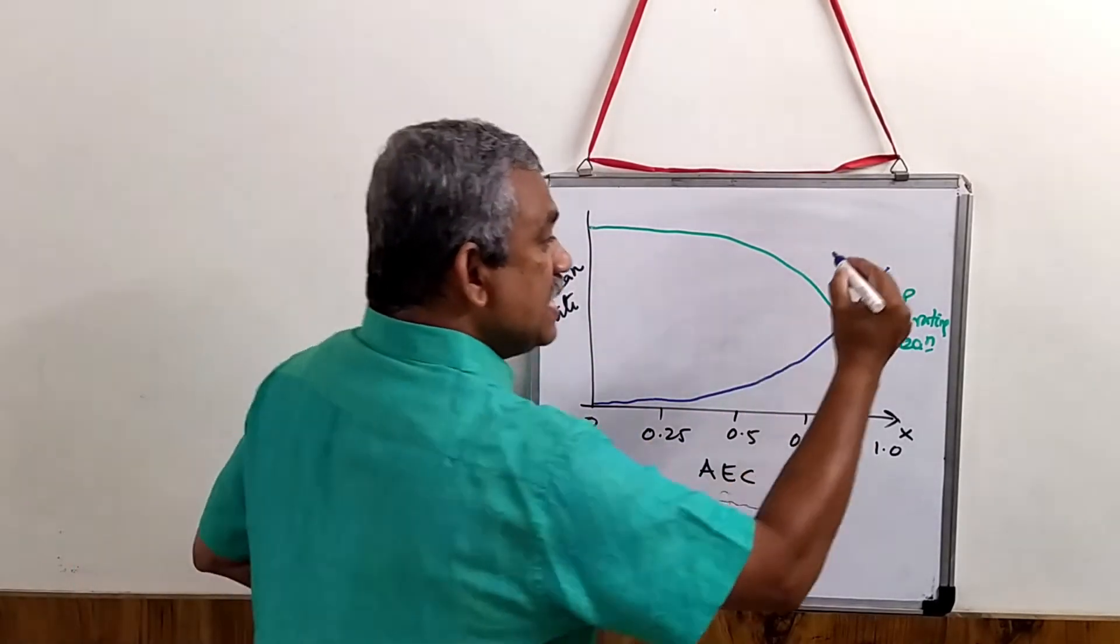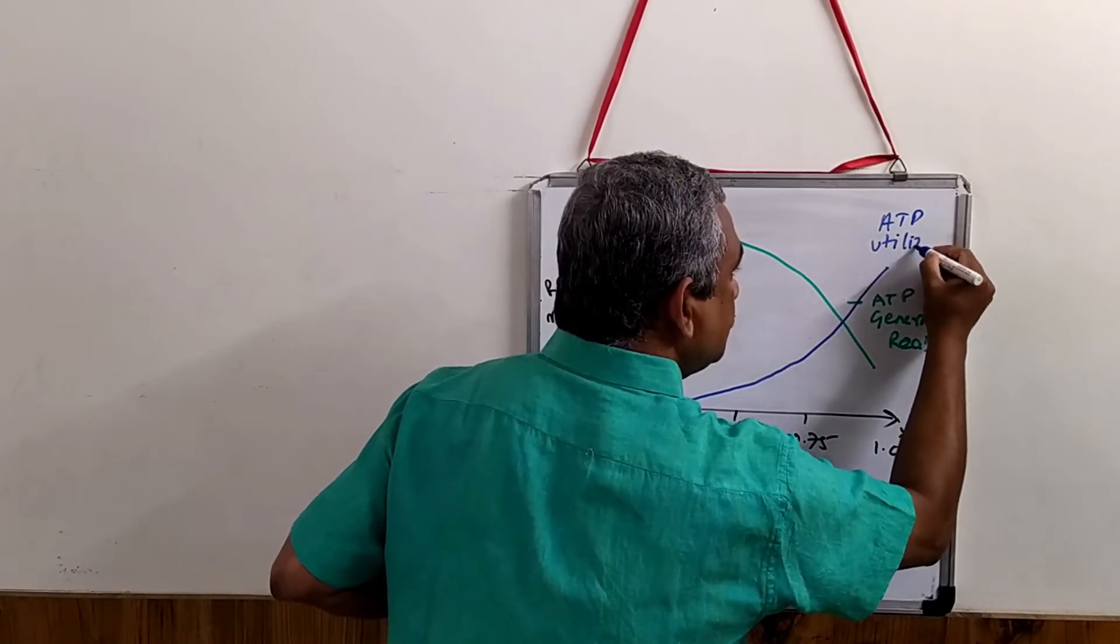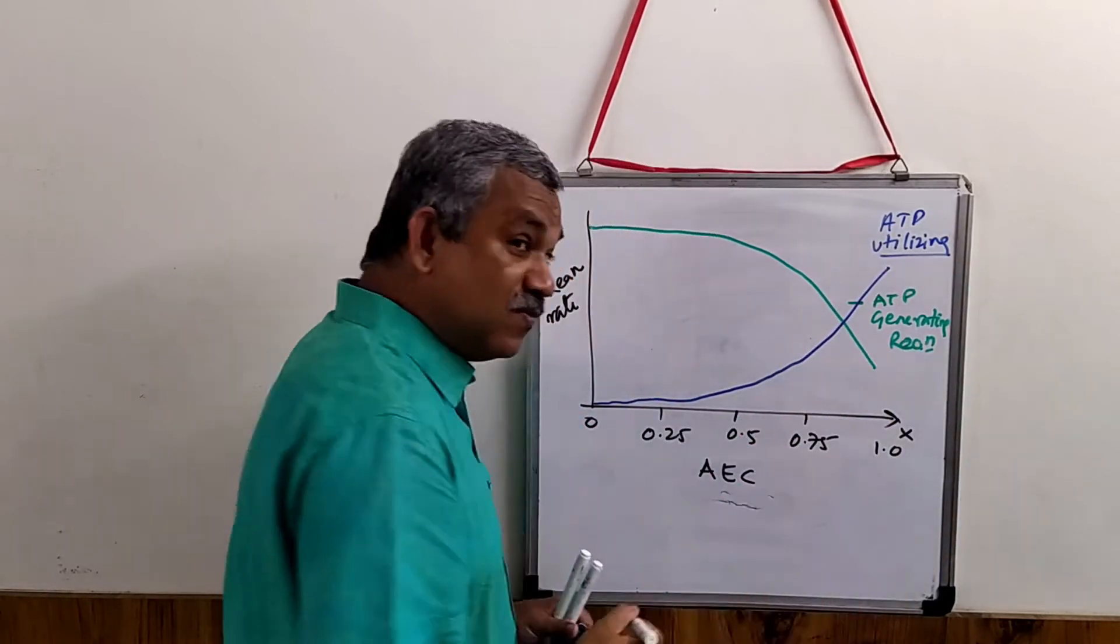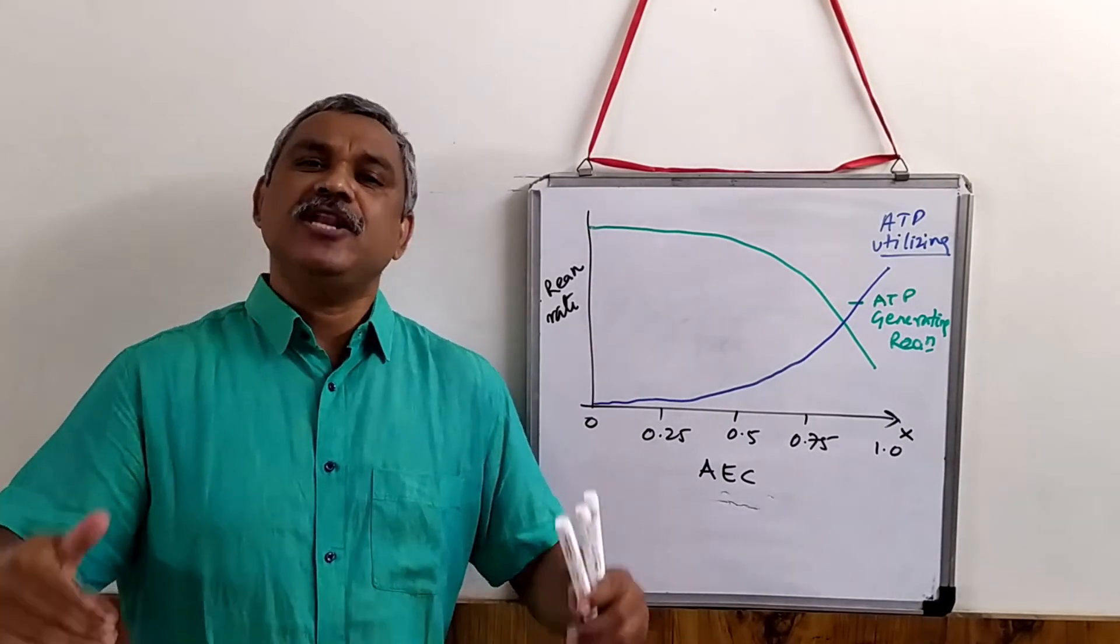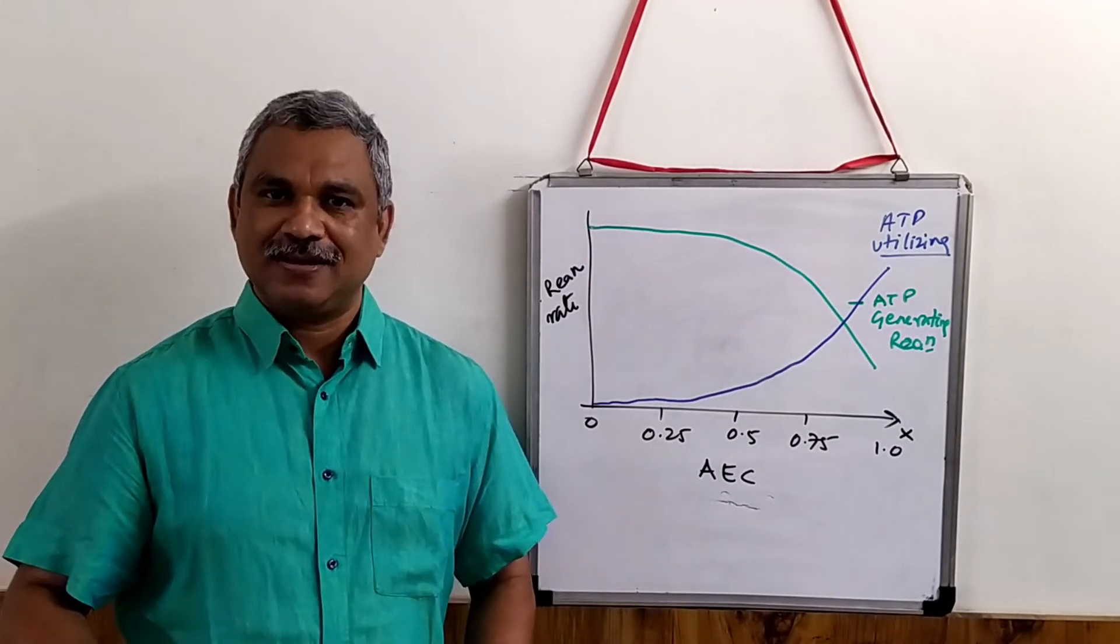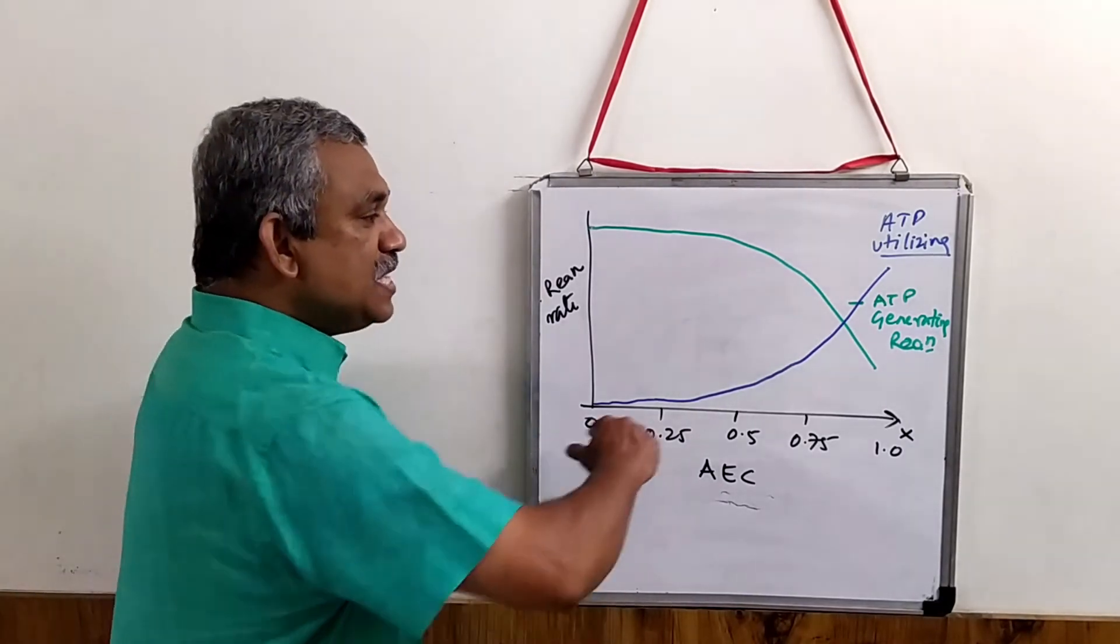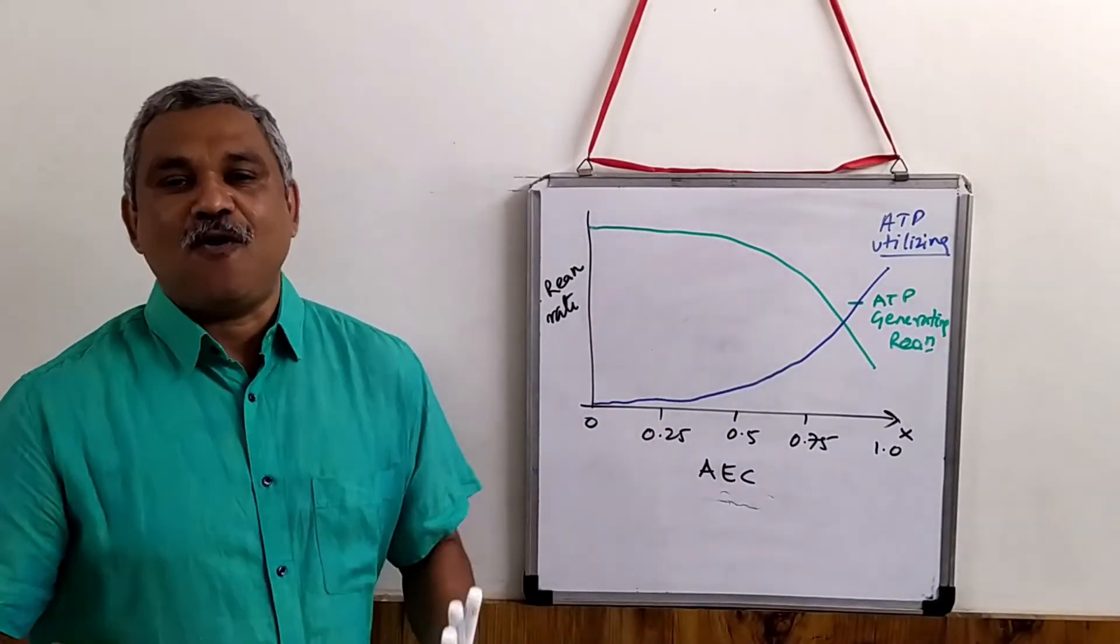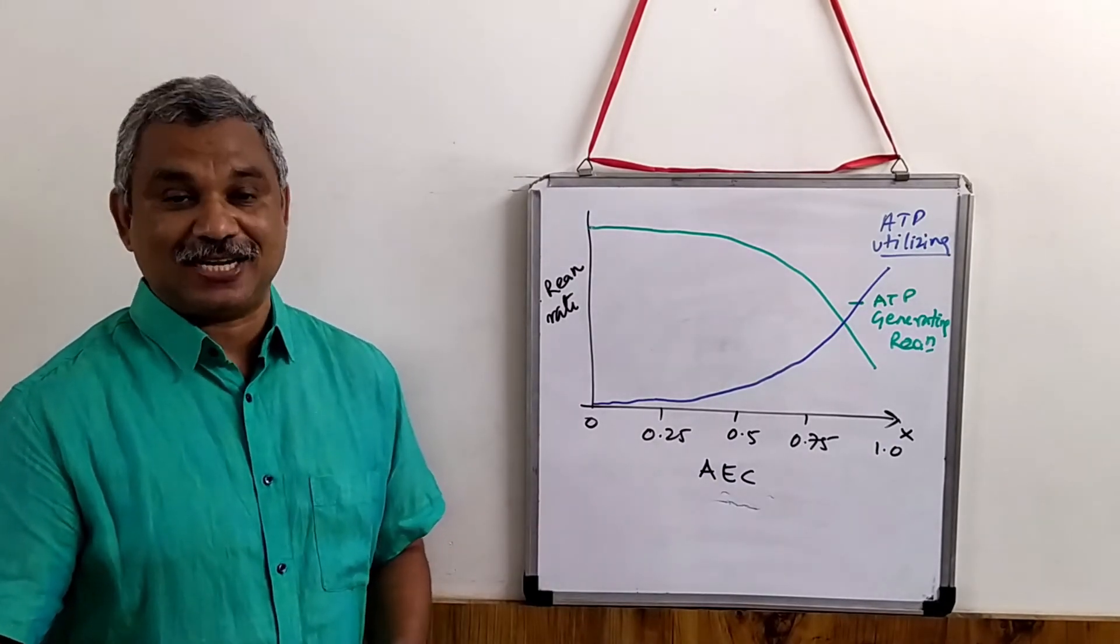So the blue is ATP-utilizing reactions. Now, in other words, they are either anabolic reactions. They will use the ATP molecules and new molecules will be synthesized. This is a graph to represent the adenylate energy charge.